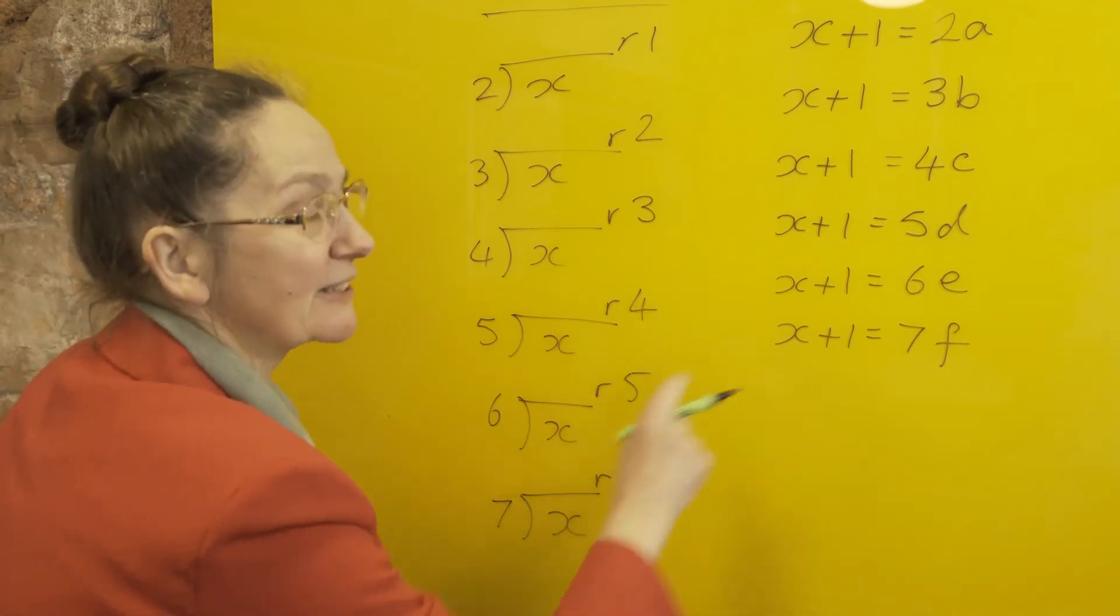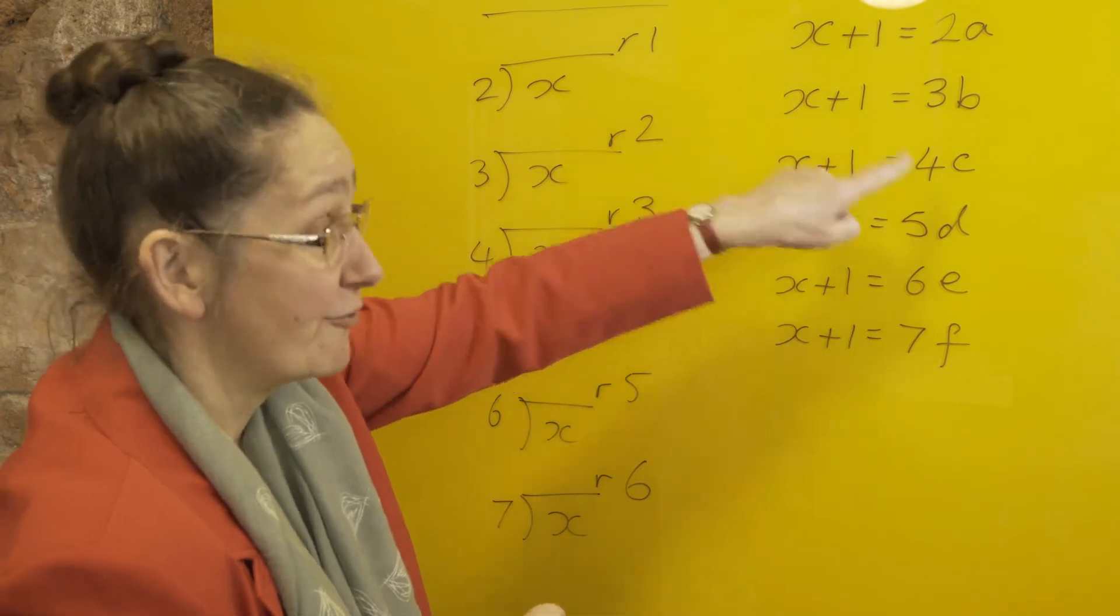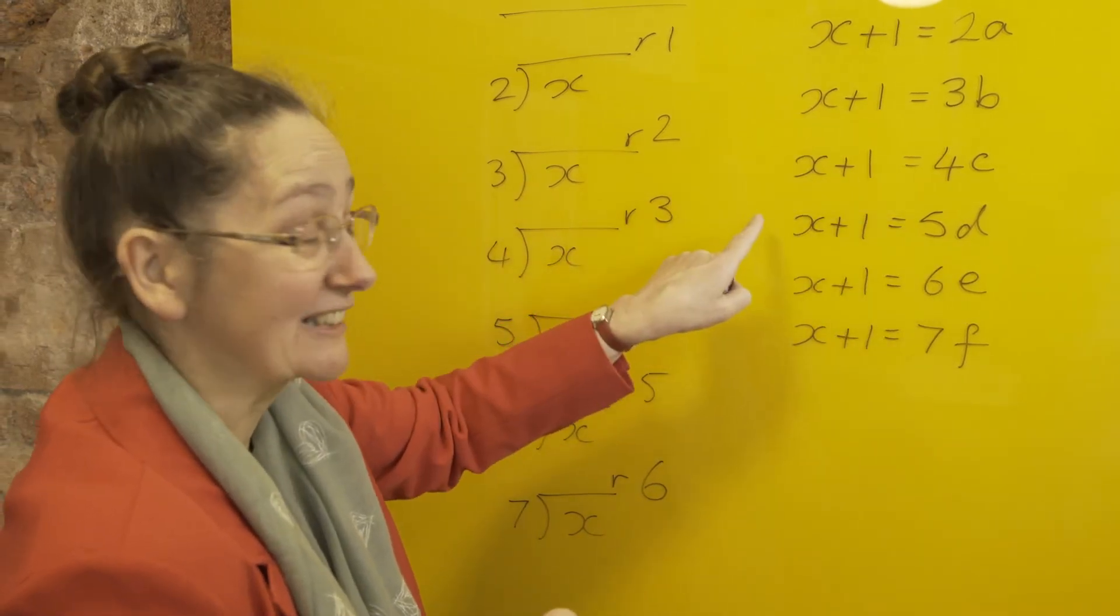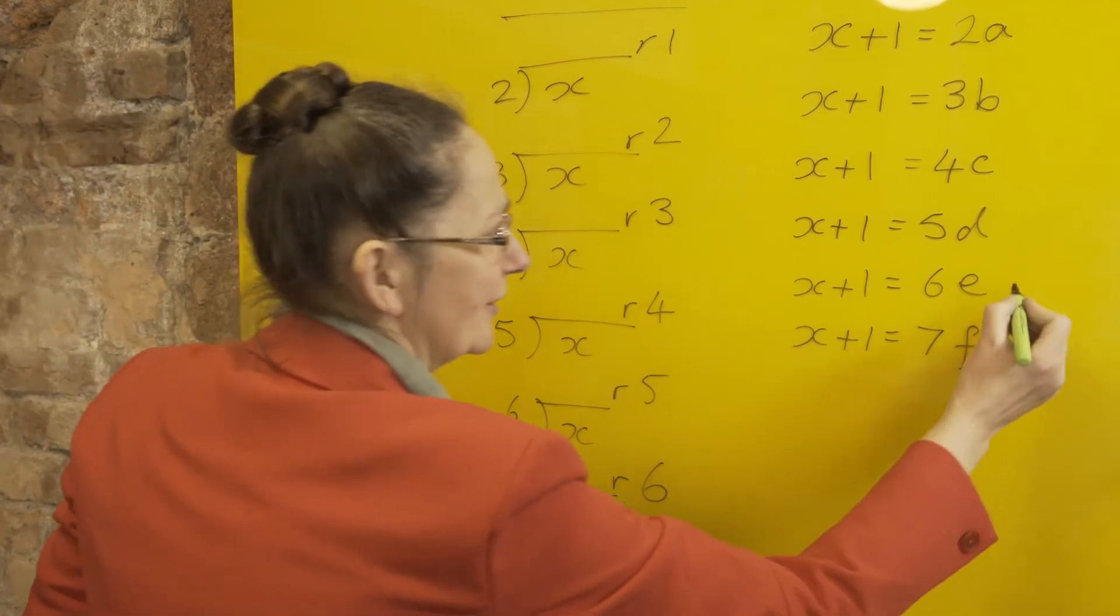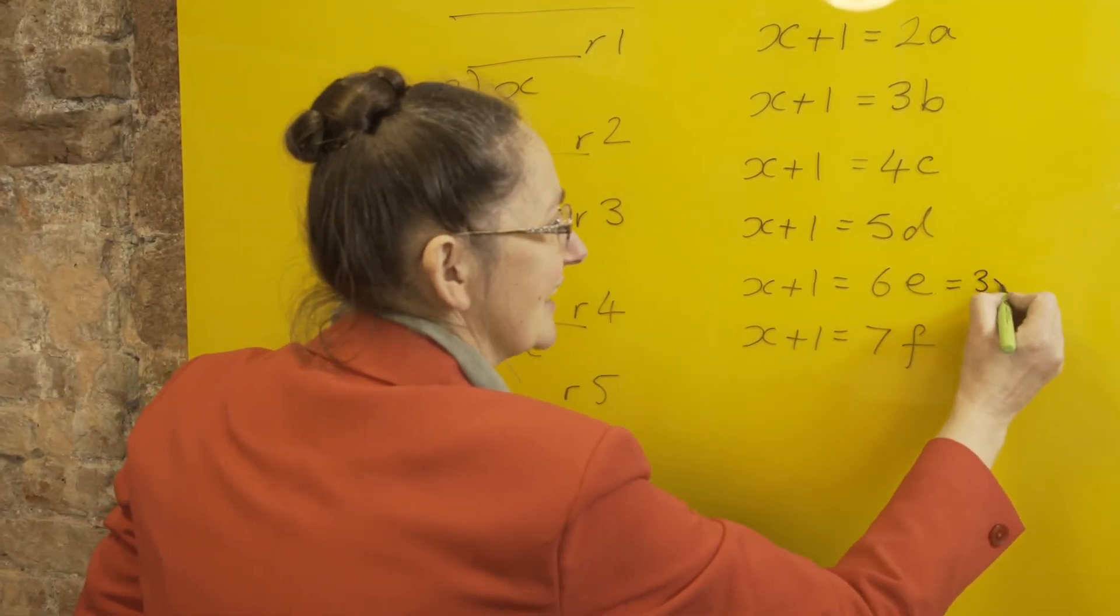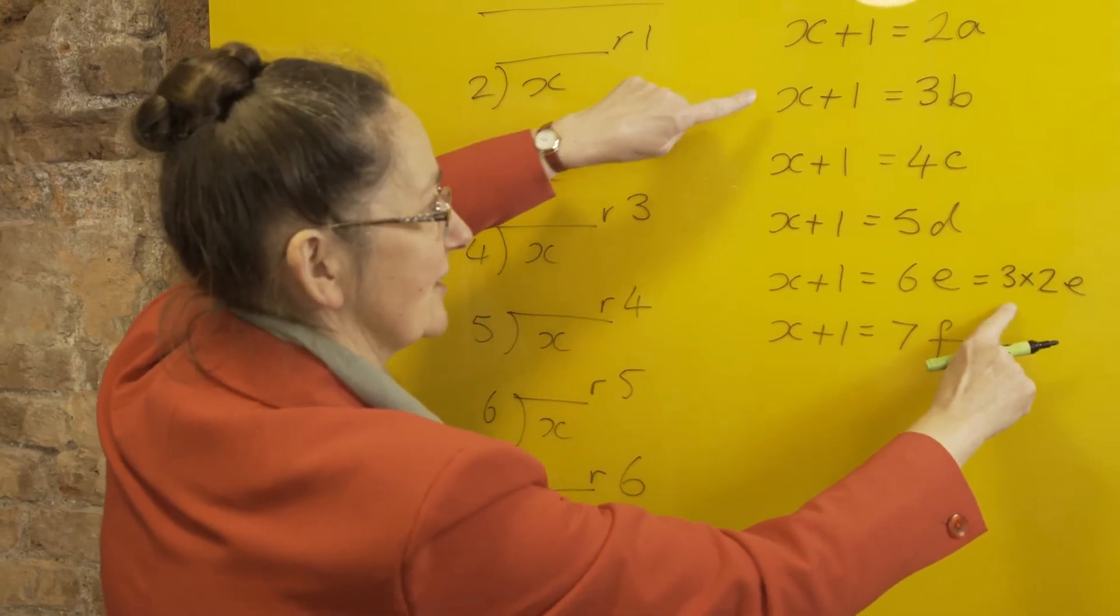That means that x plus 1 has got 2 as a factor and 3 as a factor and 4 as a factor and 5 as a factor and 6 as a factor and 7 as a factor. But hang on—6 is 3 times 2, so if I know I've got 3 as a factor and 2 as a factor, I've got 6 already.